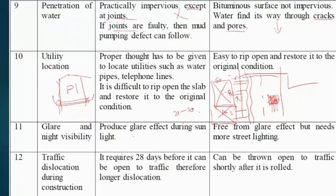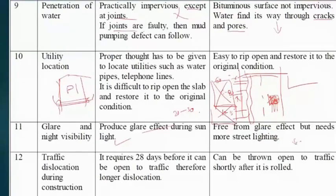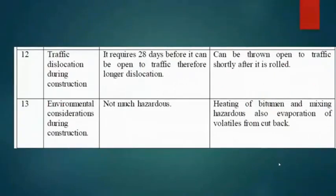For glare and night visibility, rigid pavement is light-colored, so night visibility is good but there is a glare effect during daytime. Flexible pavement is dark in nature, so street lighting is needed at night but it is free from glare during daytime. Rigid pavement allows vehicular movement only after its 28-day curing period, while flexible pavement can be opened to traffic within 24 hours.